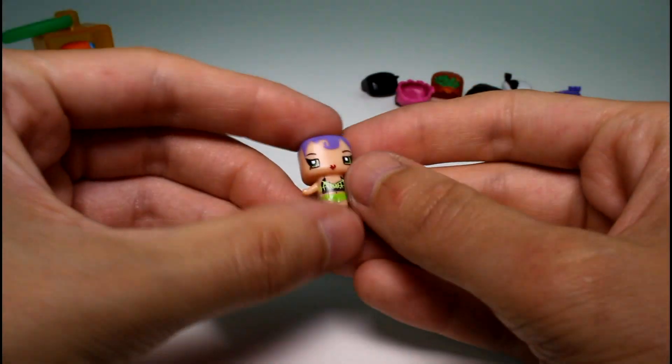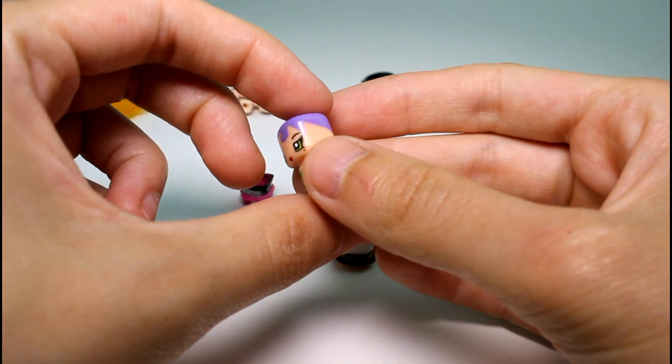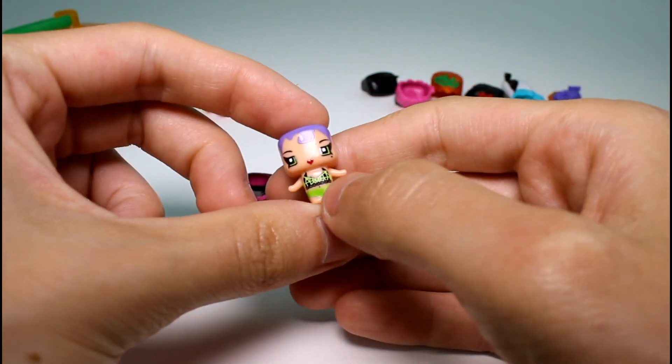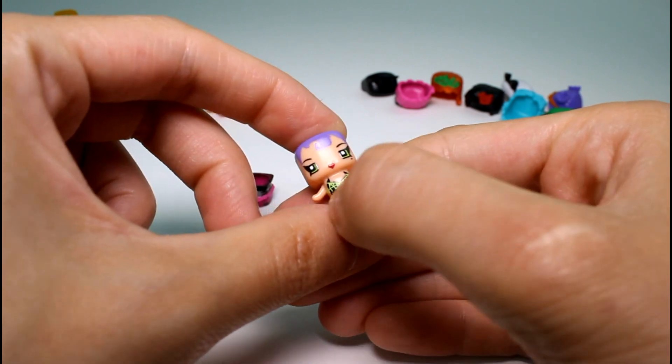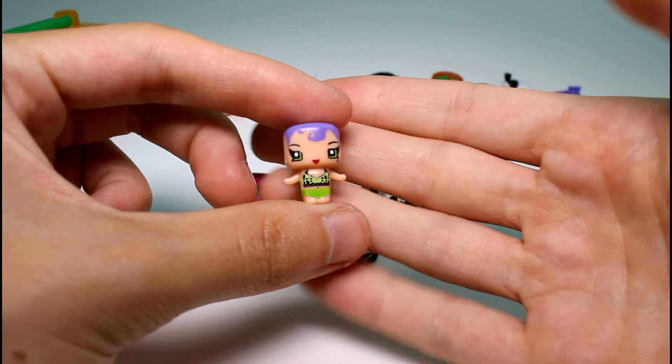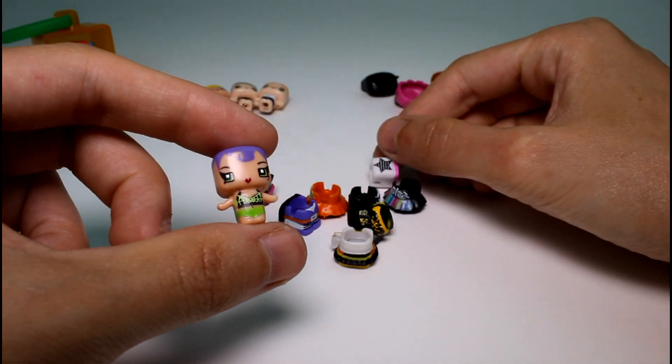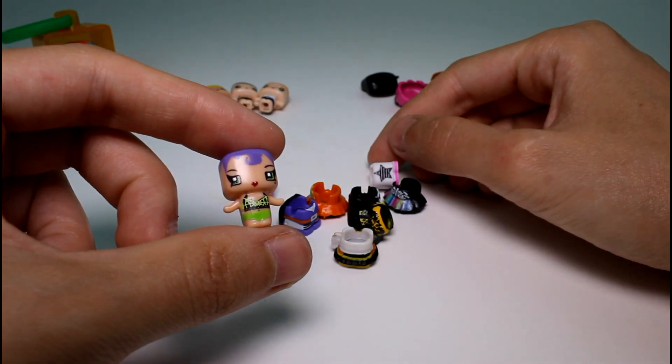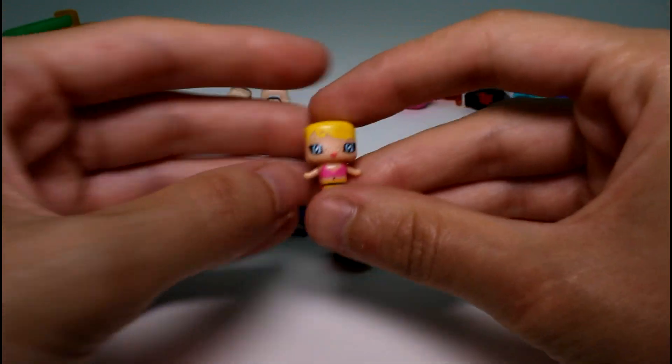Okay, so the first girl kind of reminds me of Buzz Lightyear with her hair. But she has like a little mole there. And even her top kind of looks like it's a spider web. So it's like themed, which is really cute. I mean her undergarment top. So let's see. What should we dress her as? Actually, let me show you all the girls first and then we'll dress them.